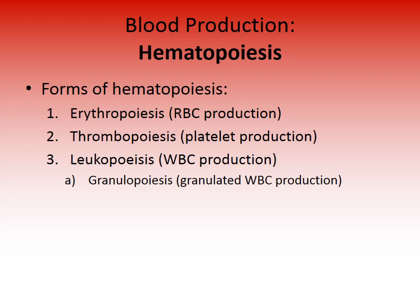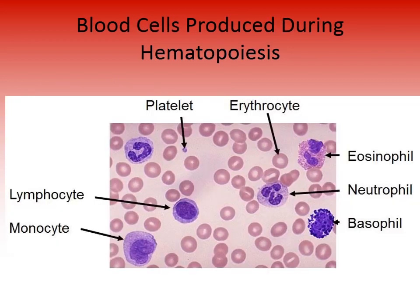There are different forms of hematopoiesis depending on what is being produced. Erythropoiesis is the production of red blood cells; thrombopoiesis is platelet production; and leukopoiesis is white blood cell production. The prefixes make sense: erythro means red, thrombo refers to platelets, and leuko means white. Within leukopoiesis, the production of granulocytes specifically is called granulopoiesis.